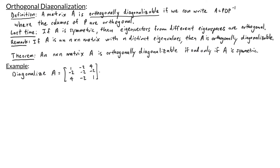In this example, we're asked to diagonalize the matrix A with entries 1, negative 2, 4, negative 2, negative 2, negative 2, 4, negative 2, 1.